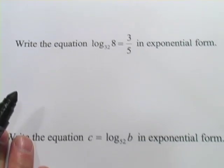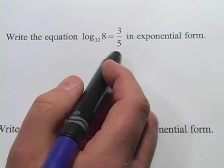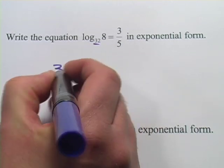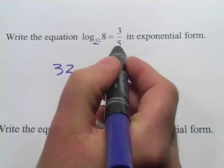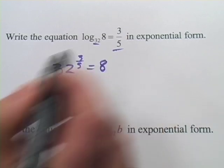Let's try another one. So here we have log base 32 of 8 equals 3/5. Remember, base 32 is the number that's being raised to the power. The power is over here, so 32 to the 3/5 equals 8.